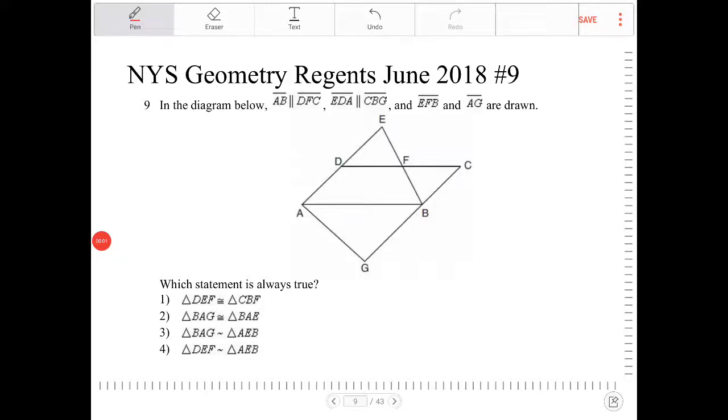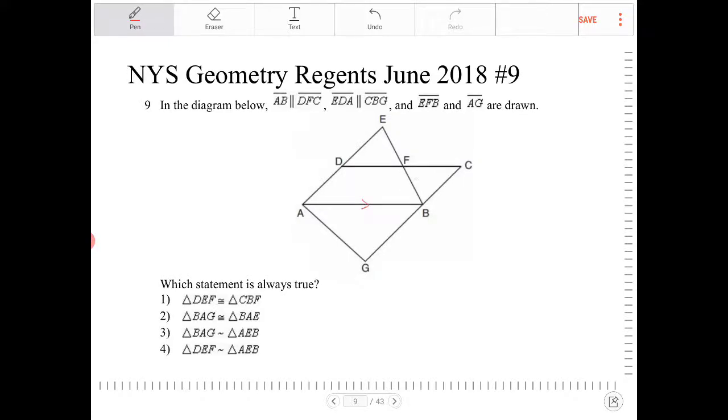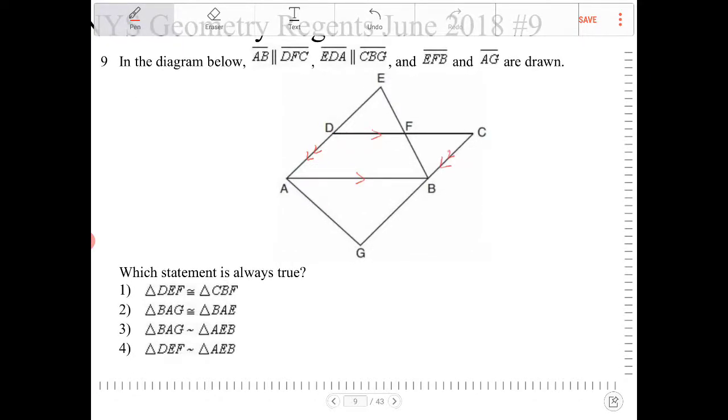In the diagram below, AB is parallel to DFC, EDA is parallel to CBG, and EFB and AG are drawn. So EFB is a straight line and AG is a line segment as indicated in the diagram.